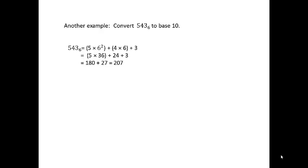6 squared is 36, so it's 5 times 36 plus 4 times 6 plus 3, or 180 plus 24 plus 3, or 180 plus 27, which is 207.